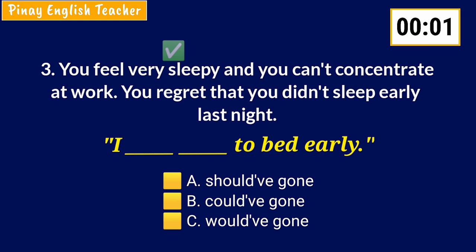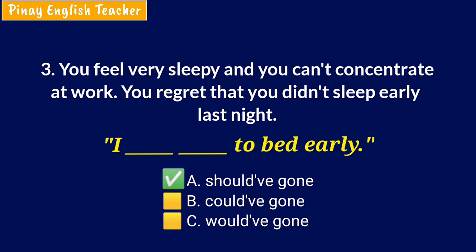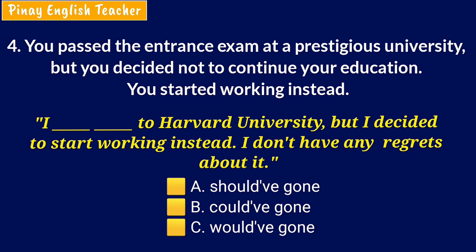Number 4: The situation is you passed the entrance exam at a prestigious university, but you decided not to continue your education and started working instead. You say: 'I _____ Harvard University, but I decided to start working instead. I don't have any regrets about it.' A. Should've gone. B. Could've gone. C. Would've gone. The answer is B — could've gone. It's about ability and possibility in the past.